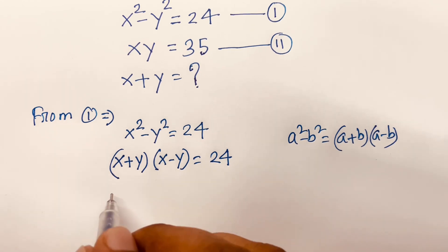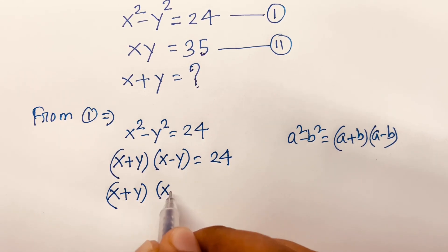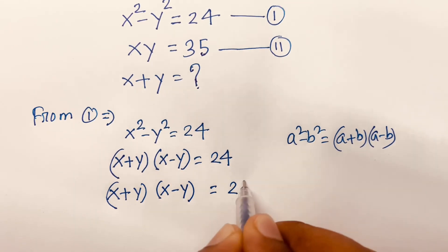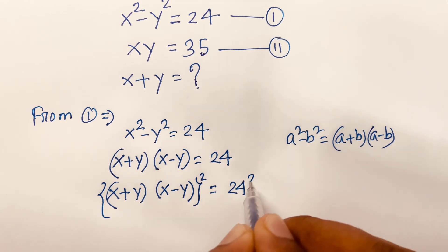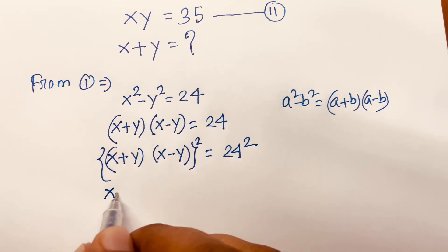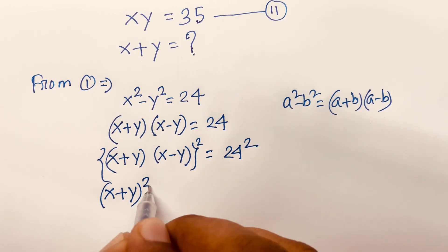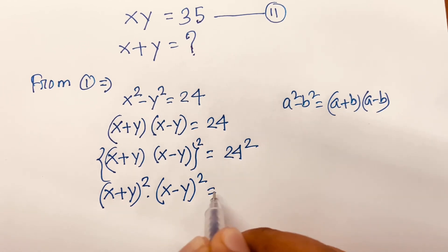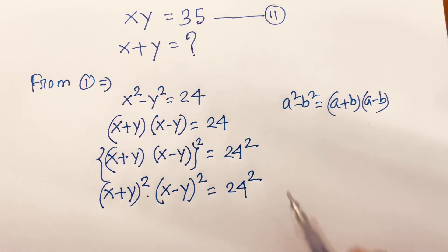Then, I can say x plus y times x minus y is equal to 24. I use both sides squared. Then this equation becomes (x + y)² times (x - y)² is equal to 24 squared.